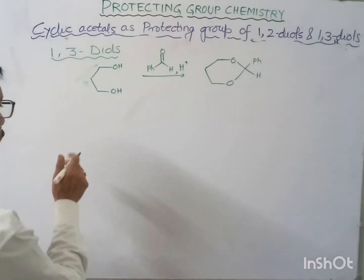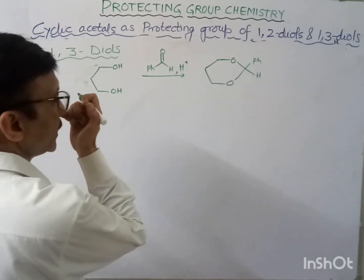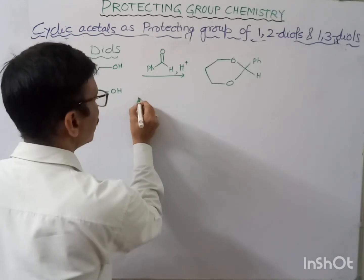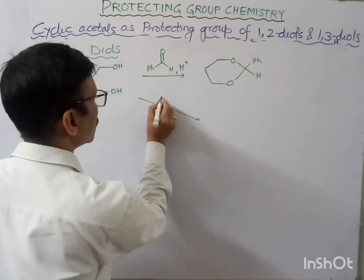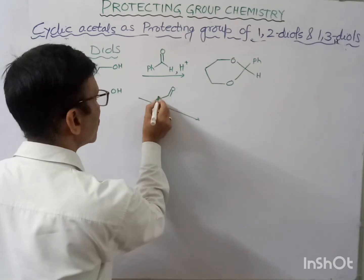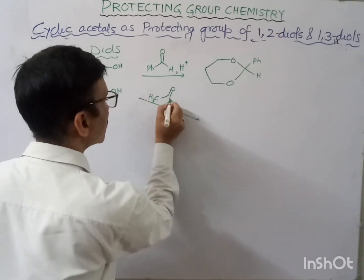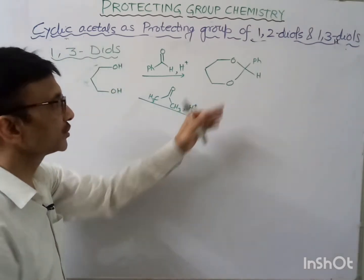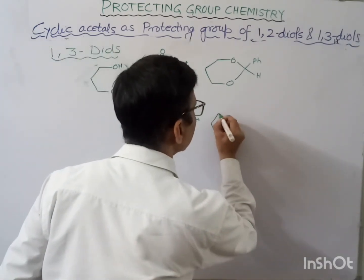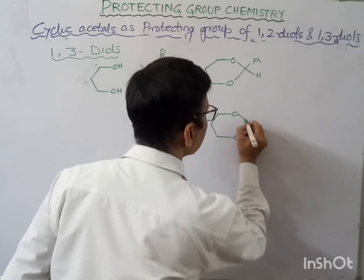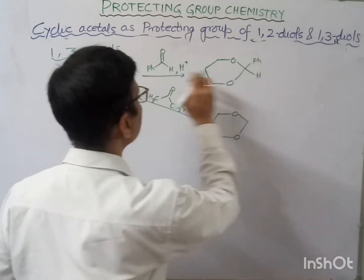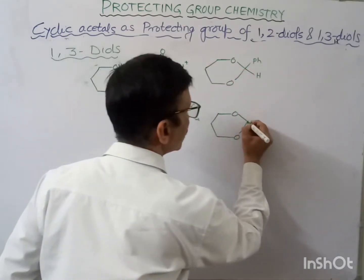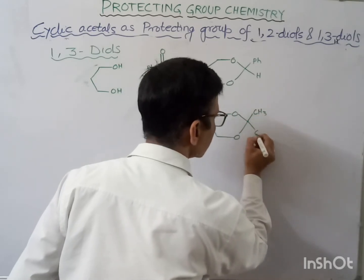If you are using benzaldehyde, then we get this product. If we use acetone, the only difference will be here: we have Ph and H in the benzaldehyde case, whereas in place of Ph and H, we will have CH₃ and CH₃.